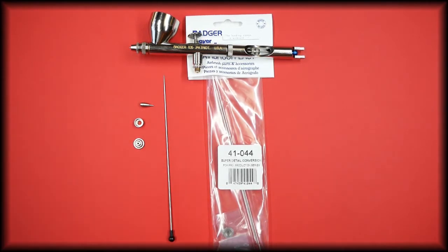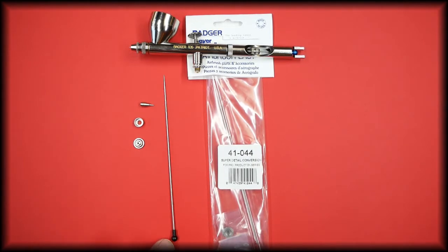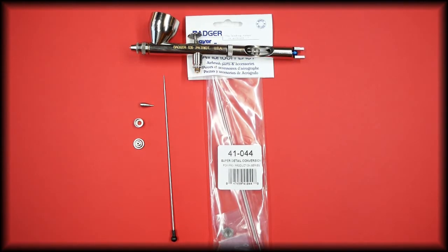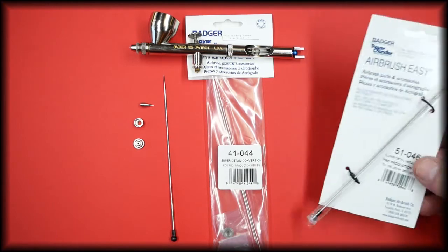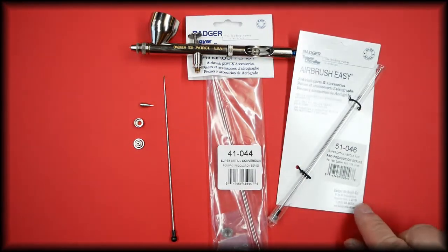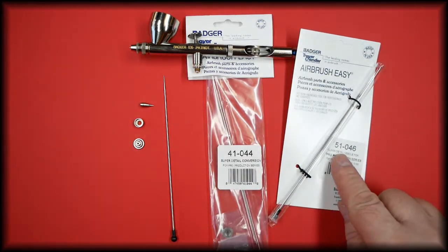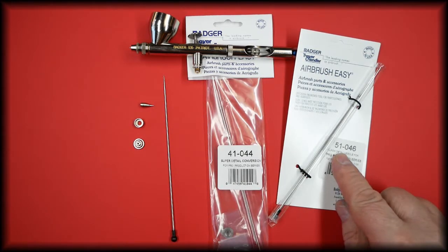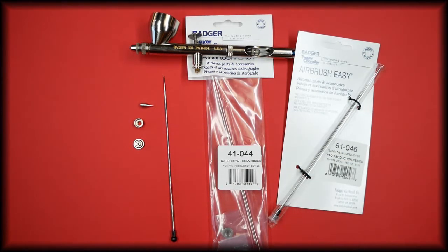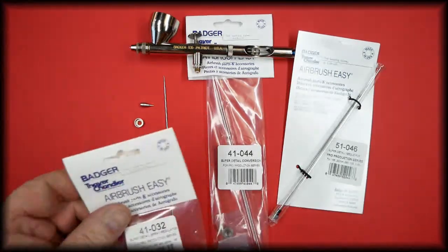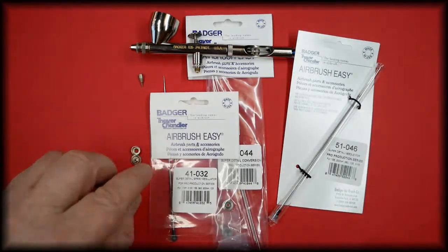This is a point three kit which is denoted by the black end on the needle. All the parts are available in our store separately. The needle is part number 51-046.